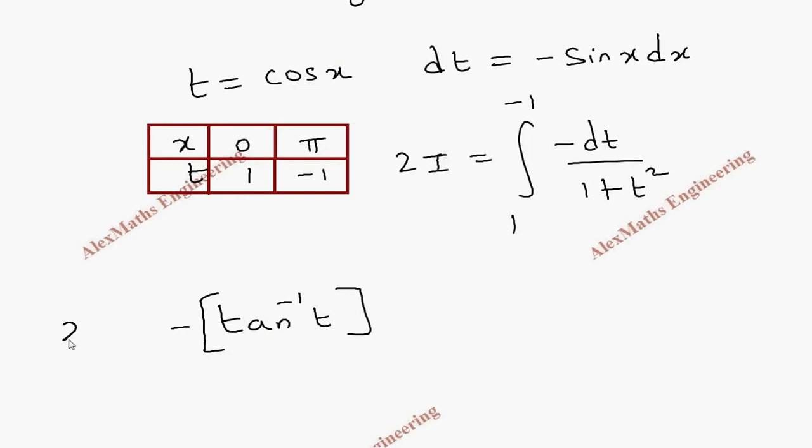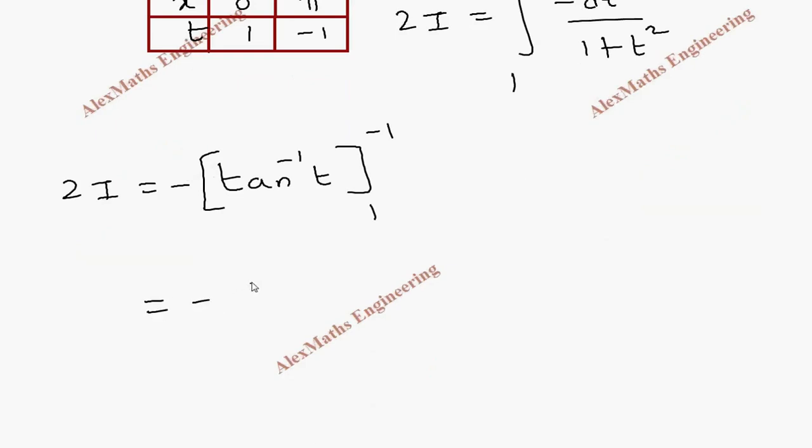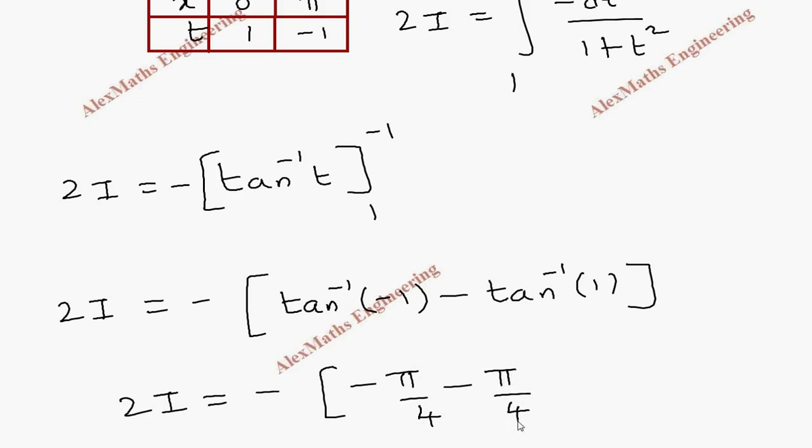After integration, we have minus sign. So this is 2i equal to, and limit is 1 to minus 1. When I substitute the upper limit, we get tan inverse minus 1 minus, when I put the lower limit, it is tan inverse 1. So 2i equal to minus tan inverse minus 1 is minus π by 4, minus tan inverse 1 is minus π by 4.